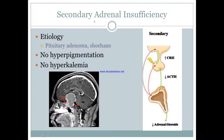Secondary adrenal deficiency means your pituitary is gone. This can be caused by a pituitary adenoma — most likely a prolactinoma — or Sheehan syndrome, where ischemia of the pituitary occurs during childbirth. There is no hyperpigmentation because you're not making ACTH, so POMC is not cleaved to make melanocyte-stimulating hormone. And there is no hyperkalemia because the adrenals are fine — only cortisol is messed up, so aldosterone is still working.